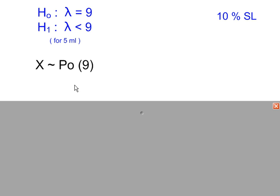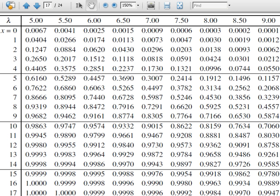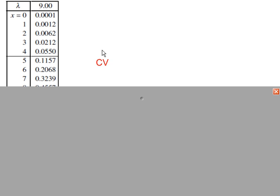So we need the following Poisson tables. Lambda is 9. So from the tables, one of these values will become the critical value.